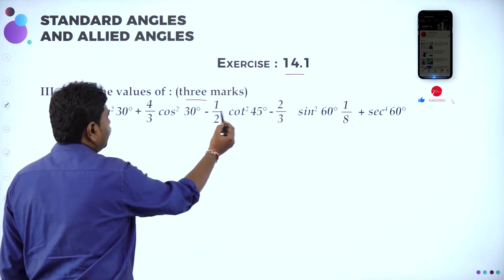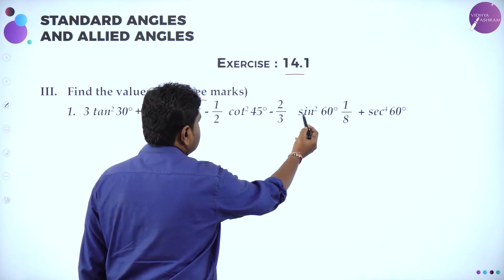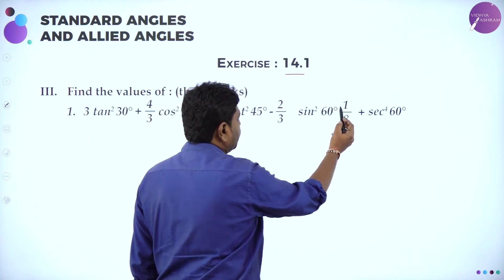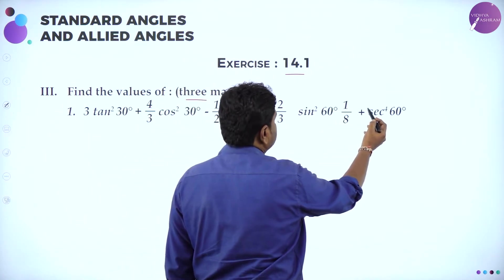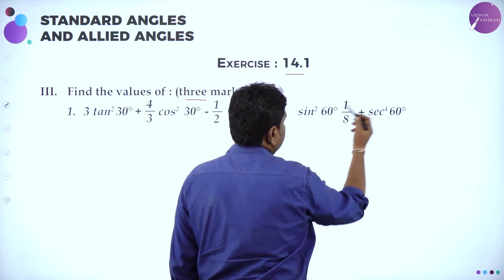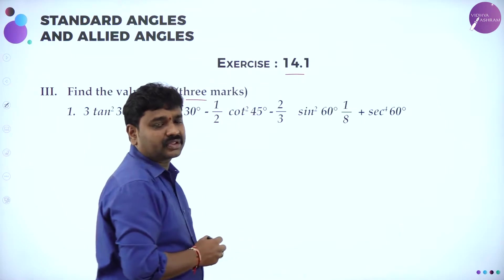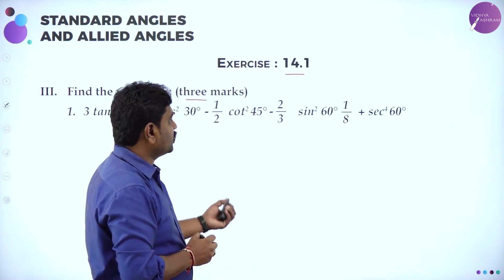...cot² 45 minus (2/3) sin² 60 into (1/8) plus secant to the power 60. So dear students, in order to solve this, first you should be thorough with the angle table.